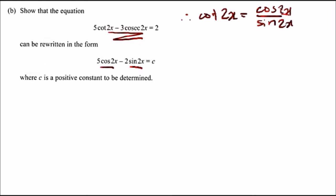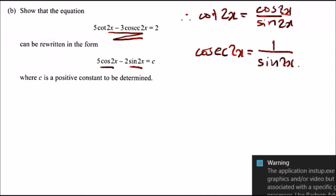Now, as for cosec, cosec 2x is the same as 1 over sine 2x. That's it. All you want to do now is substitute back in and see what happens. So replacing these two with the following identities,